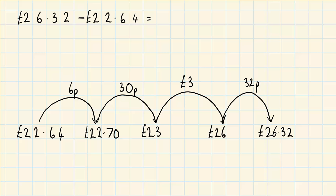So now to get my answer all I have to do is add up my jumps. Now because I've put my p signs and my pound signs it makes it very easy to add up. So we've got £3, we've got 30p here, 32p here. So that's 62p plus the 6p over here is 68p. So the answer is £3.68.